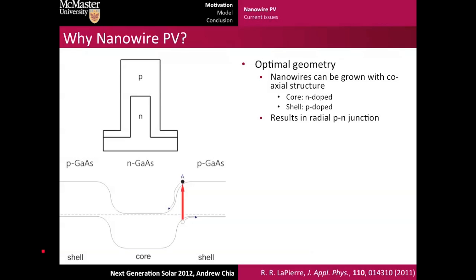What that allows is a radial PN junction, which allows light to be collected axially for maximum absorption, created from hole pairs which are then separated across the junction, and the charge carriers can be collected radially for minimum recombination. So that was the inspiration behind nanowire photovoltaics.